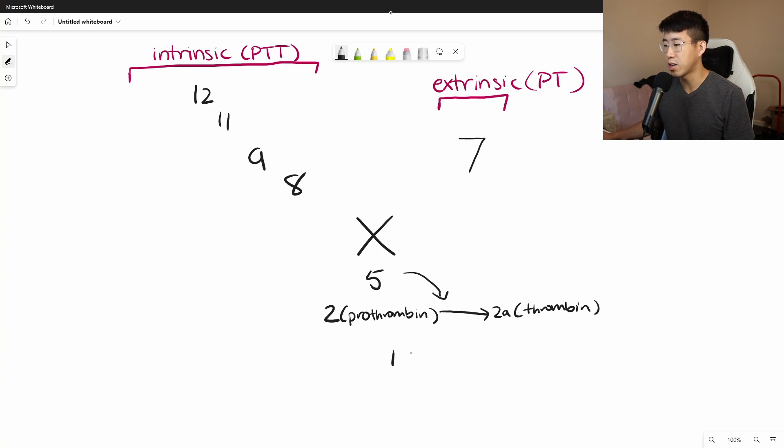And then the same thing here, you have one, factor one, which is fibrinogen, and that is going to be converted by thrombin into 1A, which is your fibrin clot.